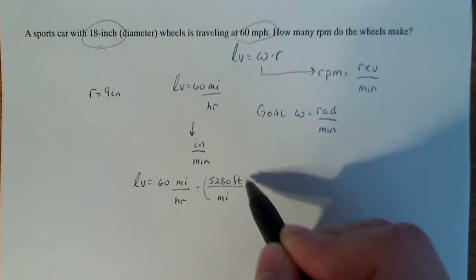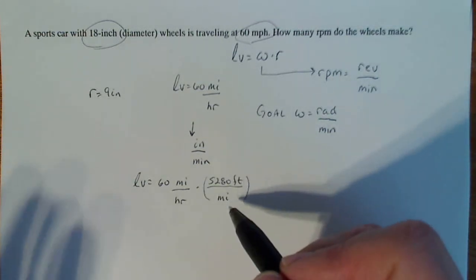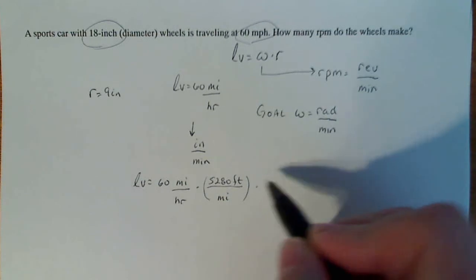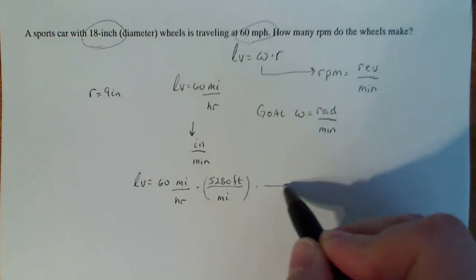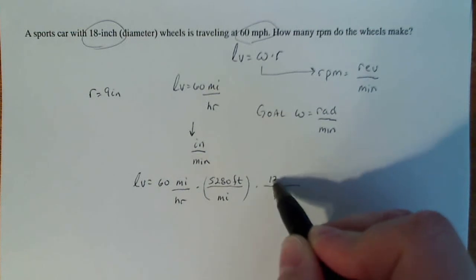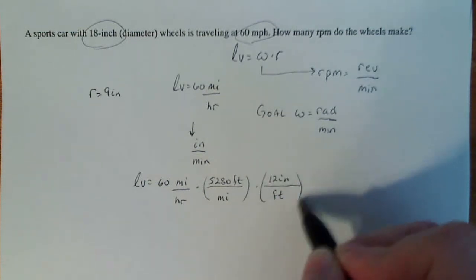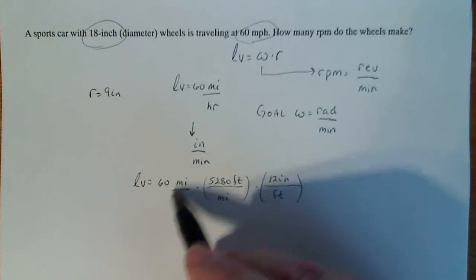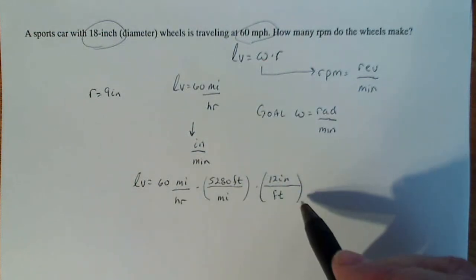So I know that there's 5,280 feet per mile. So that's just a unit of one right there because 5,280 feet and one mile, same length. And again, I'm not at inches yet, but I do know that in one foot, there are 12 inches. Again, that's another factor of one, so not changing the initial value based on multiplying by these numbers.